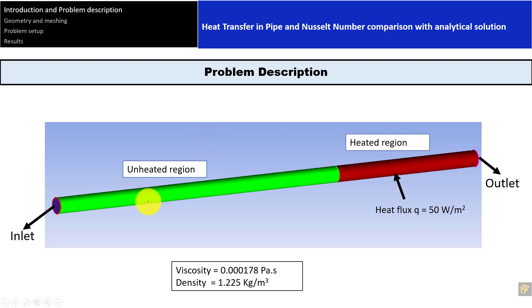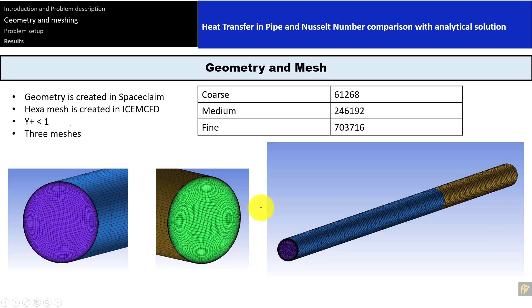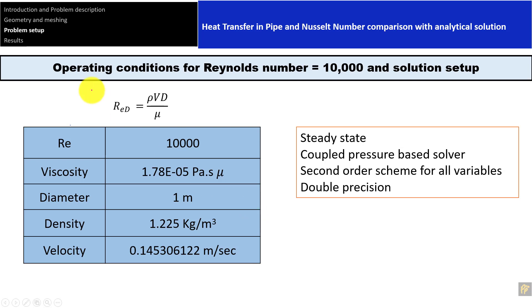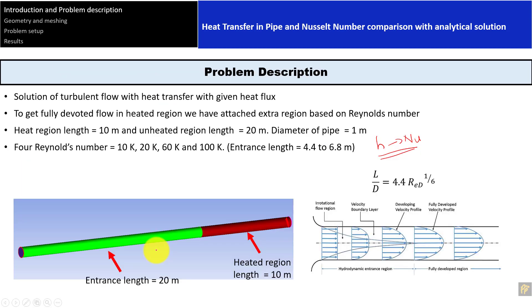These are all the given conditions. We have the inlet, outlet, two walls: unheated wall and heated wall. The heated wall has a heat flux of 50 watts per meter squared. The viscosity and density are taken for air. We can find the values of velocity from Reynolds number, viscosity, diameter, and density using the Reynolds number formula. Velocity equals Reynolds number times viscosity divided by density divided by diameter, which becomes 0.145 meters per second. So this is about the whole problem description.